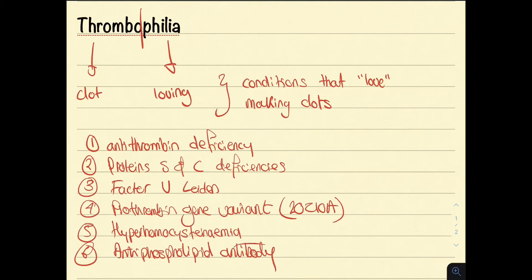Now if you do not know what the first five are, so antithrombin, proteins S and C, factor V and prothrombin, then please go back and have a listen to our secondary hemostasis video to refresh your memories.